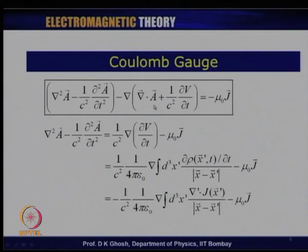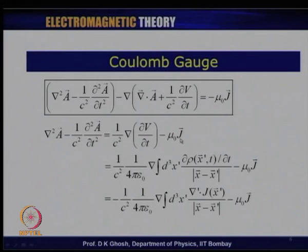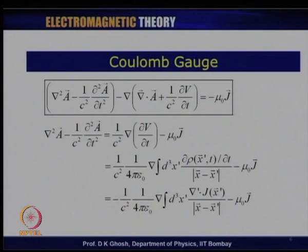The problem lies with the second equation for the vector potential. In the Lorentz gauge, a certain term was dropped, giving an equation for A alone without V. But if we simply set del dot A equals 0, the equation for A still contains a gradient of dV/dt term. So we get del squared A minus (1/c squared)(d squared A/dt squared) equals (1/c squared) grad(dV/dt) minus mu_0 j. We need to eliminate V and obtain an equation involving A alone.